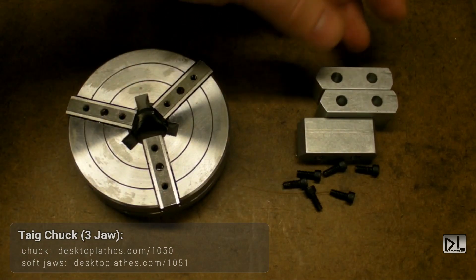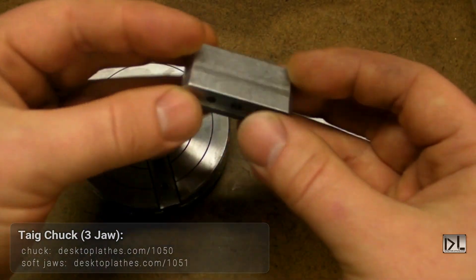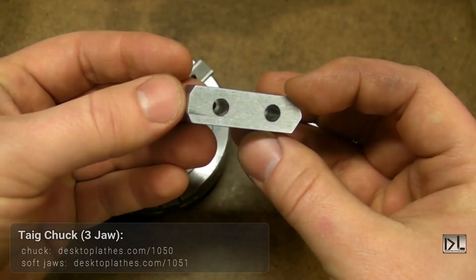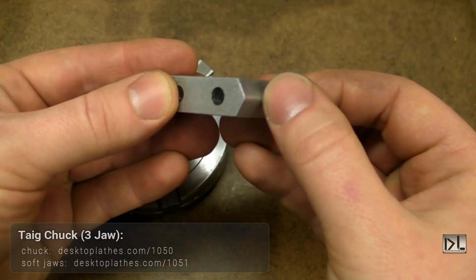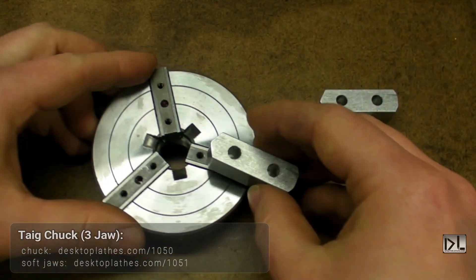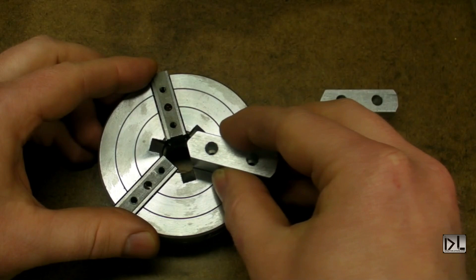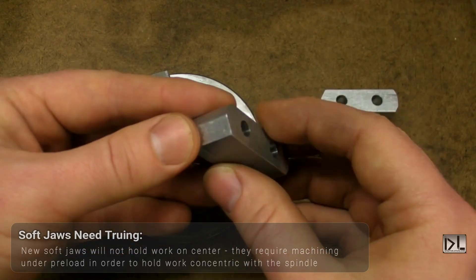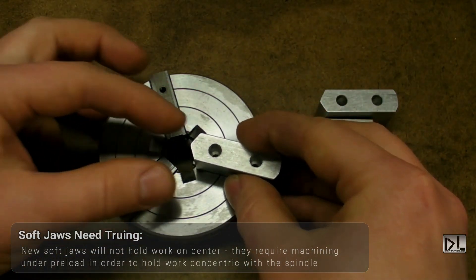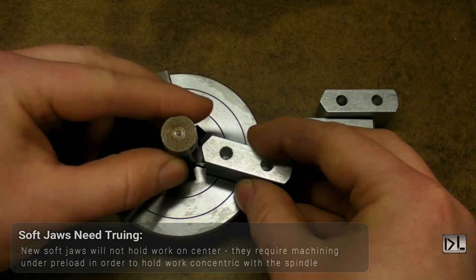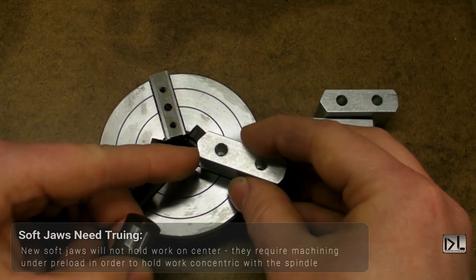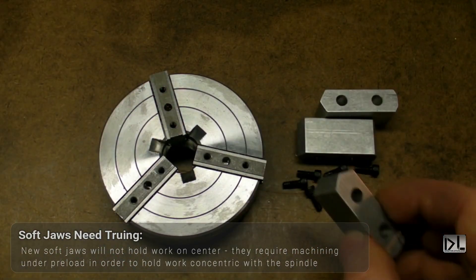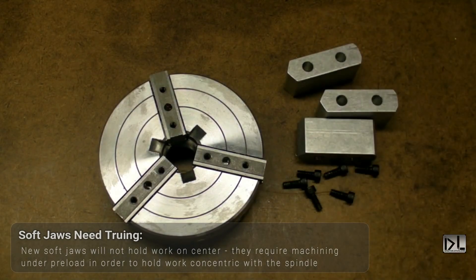The soft jaws are basically small aluminum pieces that have not been machined. There is a flat side and a narrower side, and once they're installed in the three jaw with two fasteners each, they clamp down on the material. But before you've trued them up, they're not going to put the material dead center with the spindle. So one of them might be a little bit further back than the others. So this is going to illustrate why we need to true those up and how to go about doing it.